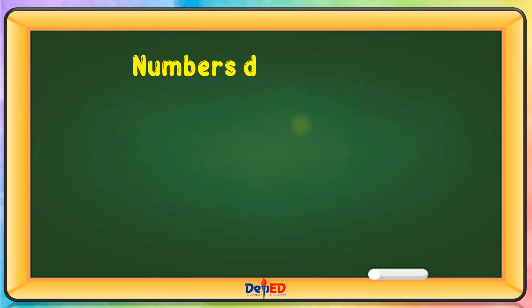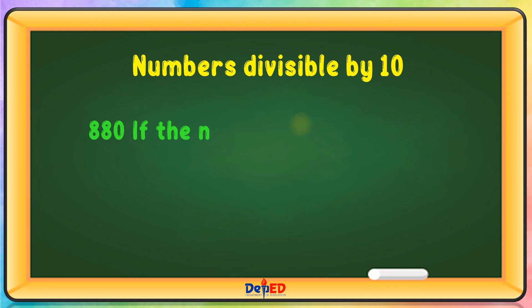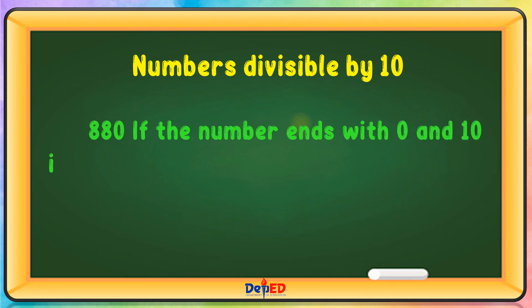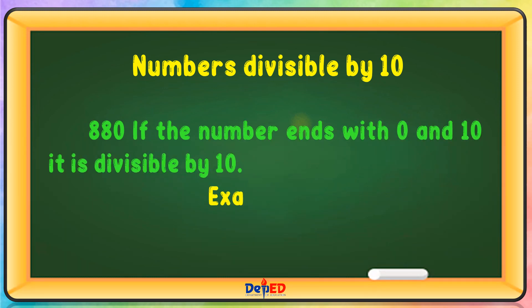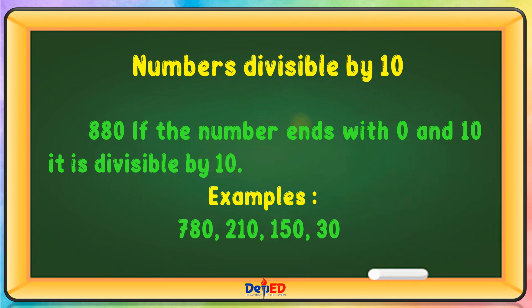Numbers divisible by 10: If the number ends with 0, it is divisible by 10. Examples: 780, 210, 150, and 300.